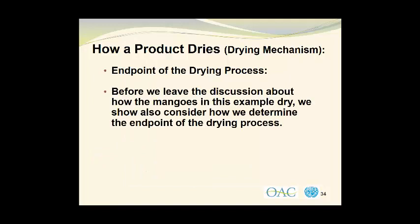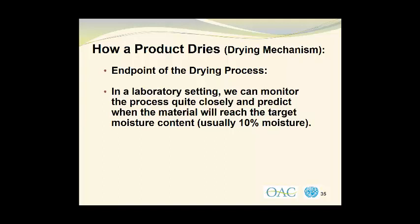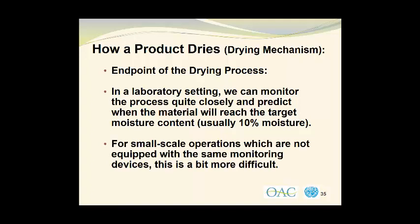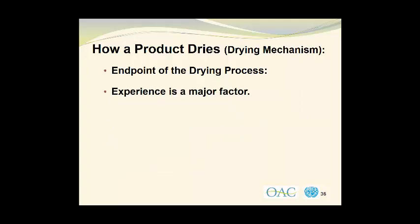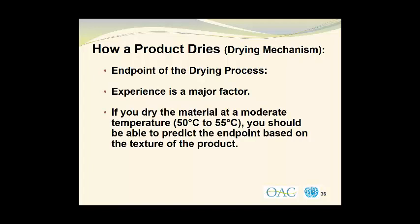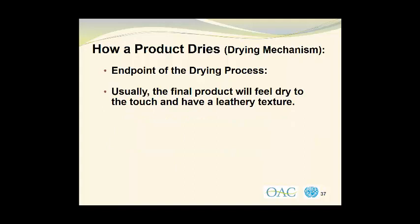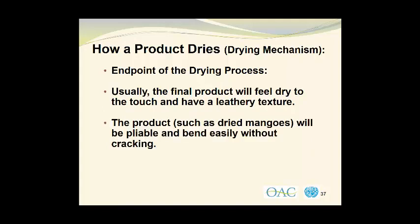Before leaving the discussion of how mangoes dry, we should consider how to determine the end point of the drying process. In a laboratory setting, we can monitor the process closely and predict when the material will reach the target final moisture content, usually around 10%. For small-scale operations, experience is a major factor. Drying at a moderate temperature of 50 to 55 degrees Celsius, you should be able to predict the end point based on texture — the final product will feel dry to the touch, have a leathery texture, and be pliable, bending easily without cracking.